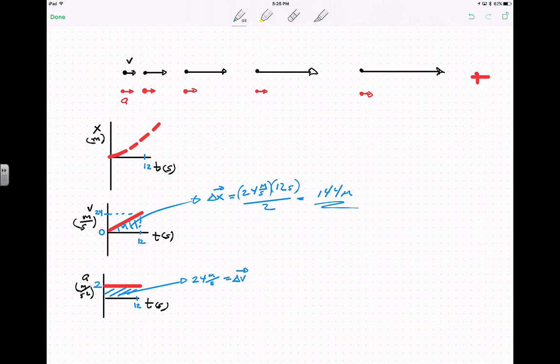It's change in position. So if it started at 0 position, you'll notice that the position after 12 seconds should be our 144 meters. So that was the subway train problem.